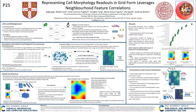Hi, I'm Sreejith and I'm excited to share my research on representing cell morphology readouts in grid form to leverage neighborhood feature correlations. The cell painting dataset is an unbiased systems biology measurement of various cell statistics across six different stains, five channels, and eight constituent organelles. The problem, however, is that the numerical features are highly correlated and difficult to interpret biologically.